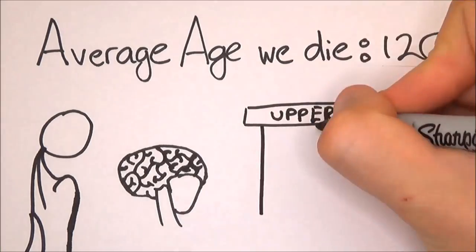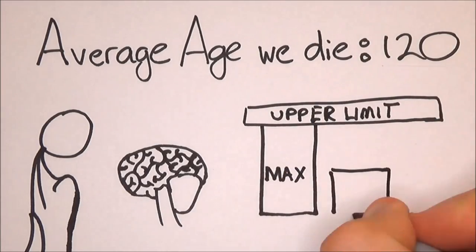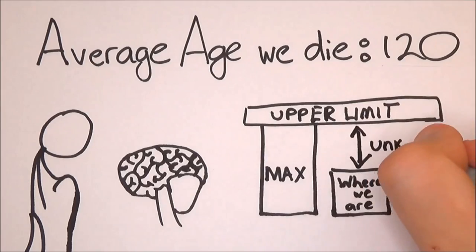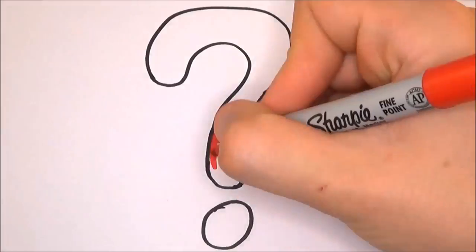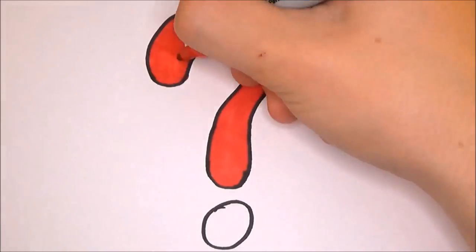Currently, researchers believe that human lifespan does have an upper limit, so life expectancy won't just keep increasing indefinitely. What this age limit might be, however, isn't clear, and probably won't become so for many years to come.